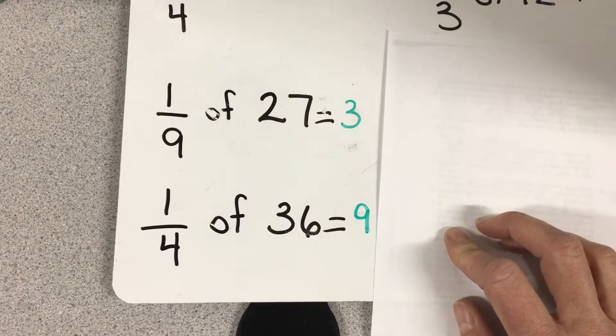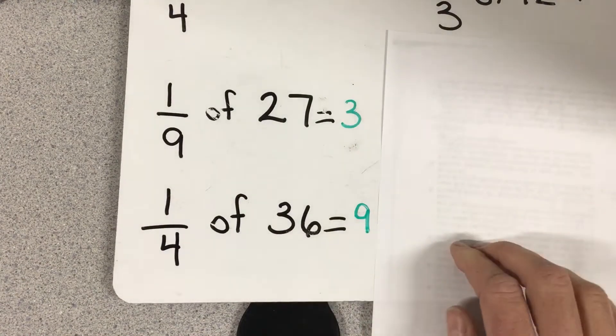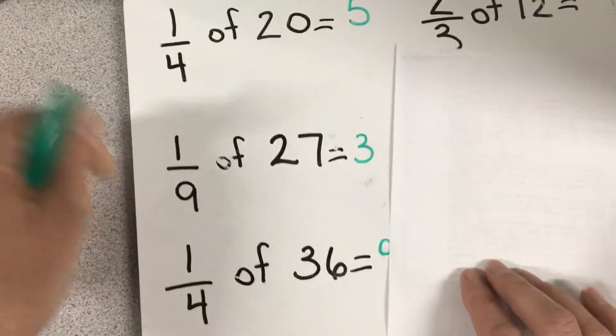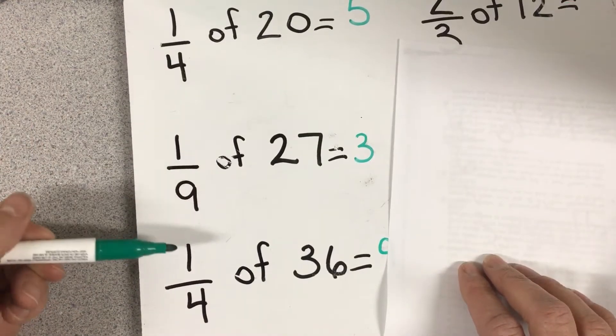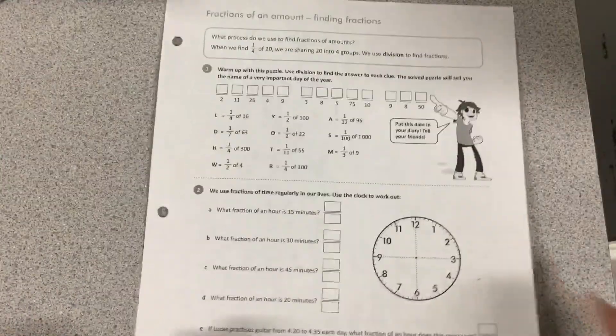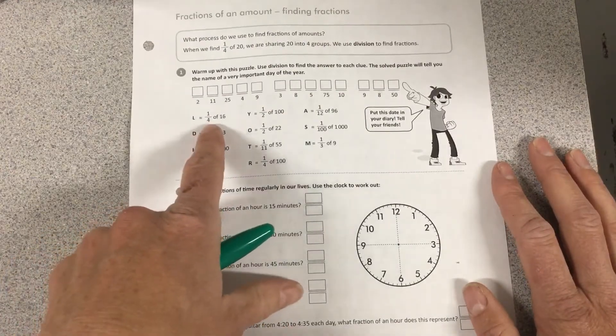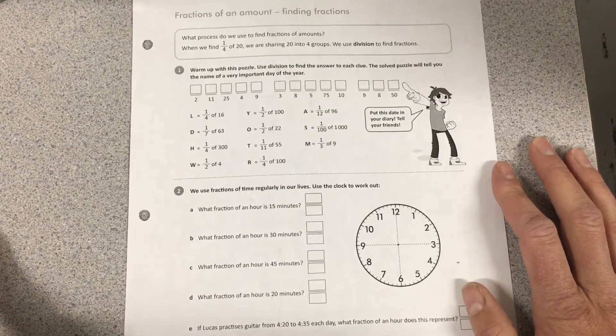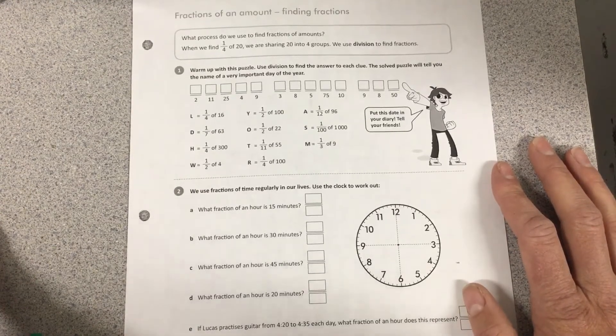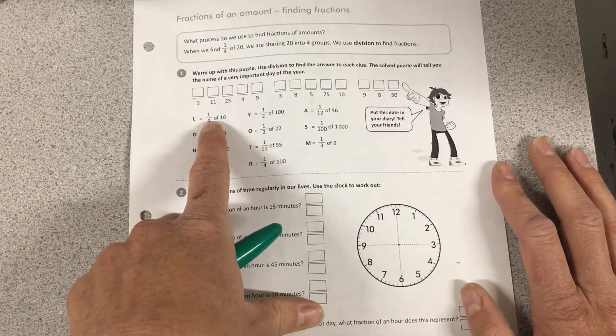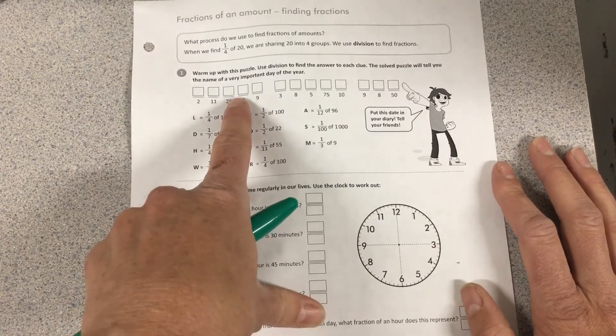That is how you do those questions when your numerator at the top is 1 - you just do the dividing. What you should notice is your top number in your fraction here: it's 1, 1, 1. All I had to do was divide by the denominator, the bottom number. When you're looking at page 21, that's what you're going to do. Warm up with the puzzle using division to find the answer for each clue. The solved puzzle will tell you the name of a very important day of the year. So I would take my 16, divide it by my bottom number 4, get 4, and there's an L, so on the 4 I would put an L.